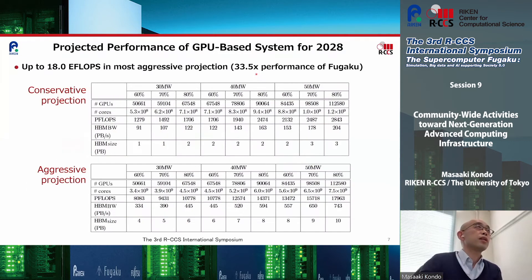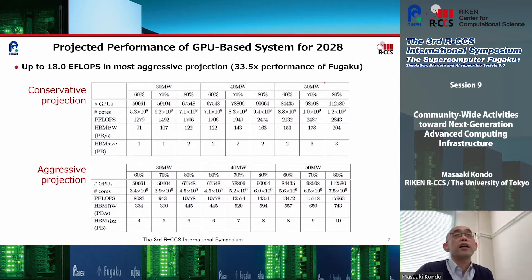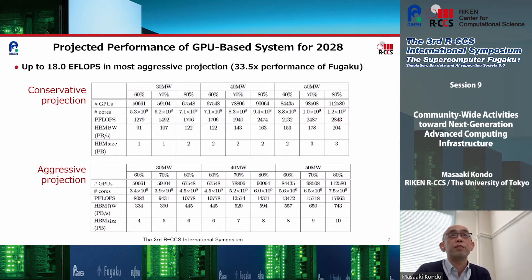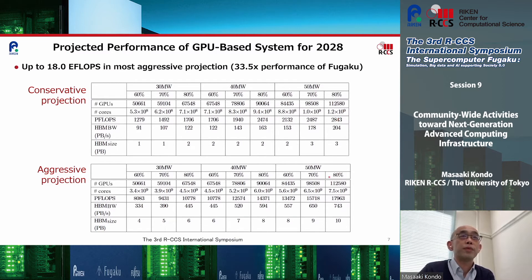Next, we focused on the GPU-based machine. We have both a conservative projection and an aggressive projection. Again focusing on the most aggressive case — 50 MW with 80% of total power budget devoted to computing — the conservative projection shows the GPU-based system can achieve only 28 hexaflops, which is not very good. But for the aggressive projection, it may achieve 80 hexaflops, meaning 33.5x the performance of Fugaku, which is a much better result.